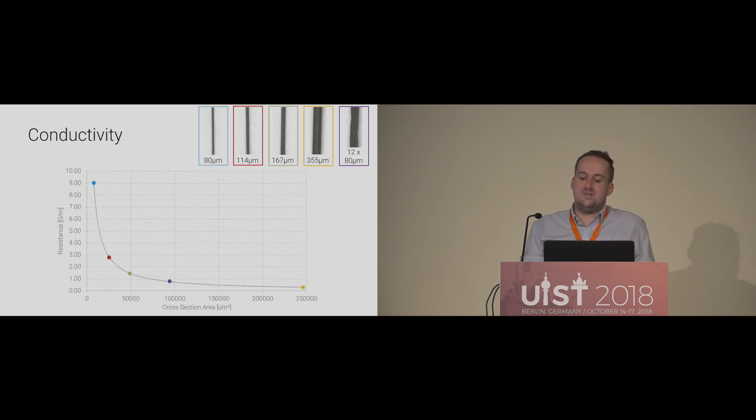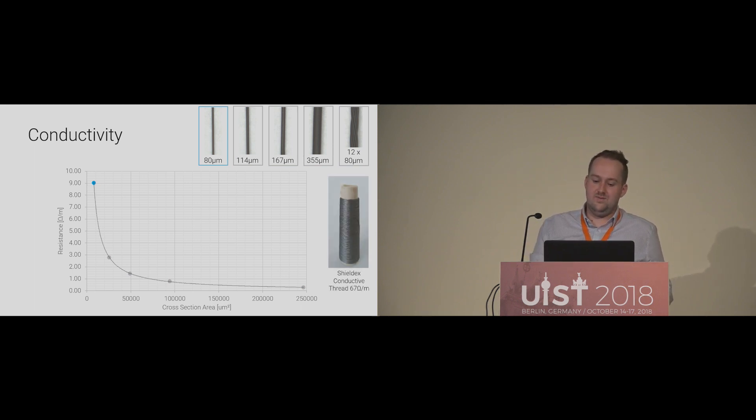We also have been interested in the conductive behavior of the yarn. The thicker the yarn gets, the more conductive it becomes. Even the thinnest yarn of only 18 micrometer thickness has a resistance of 9 ohm per meter, and this is comparatively low compared to off-the-shelf yarns, such as distributed by Shieldex.